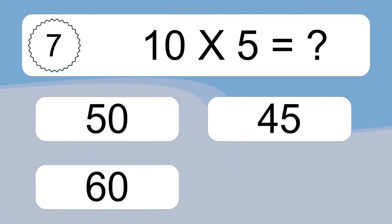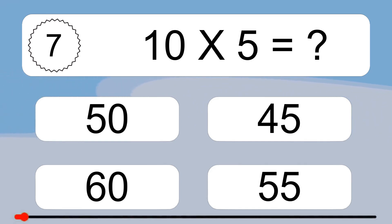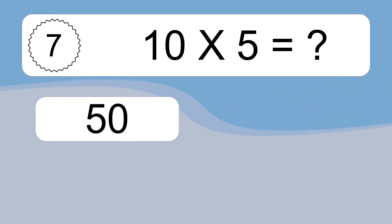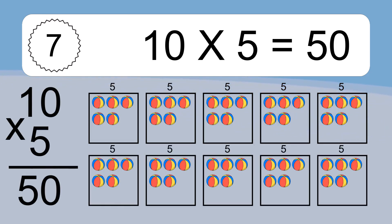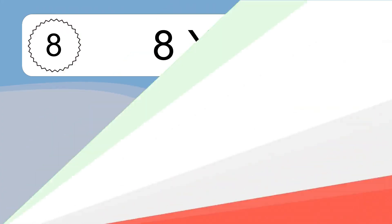10 times 5 equals what? Ten times five equals fifty. We have ten boxes and each box has five colorful balls inside. If you count all the balls in all the boxes together, you will have ten times five balls. This equals fifty balls.